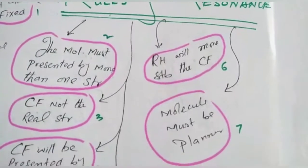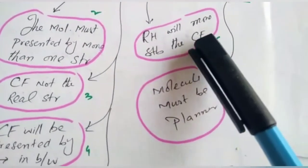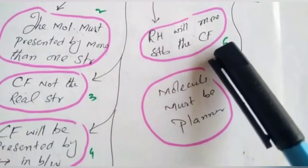Number six, resonance hybrid will be the most stable canonical form.